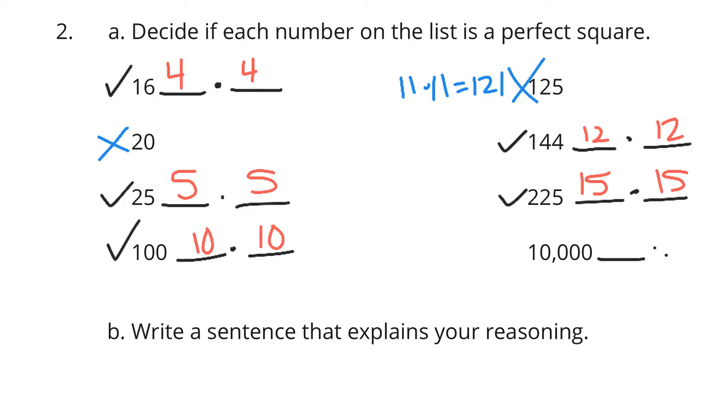13 is not big enough, 14 is not big enough, but 15 is big enough for 225. 15 times 15 is equal to 225, so 225 is a perfect square. And lastly, for 10,000, that's simply going to be 100 times 100.